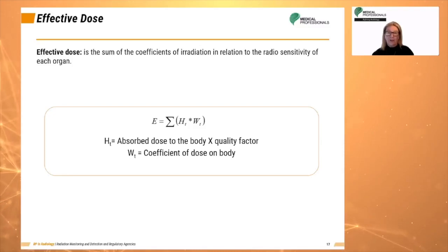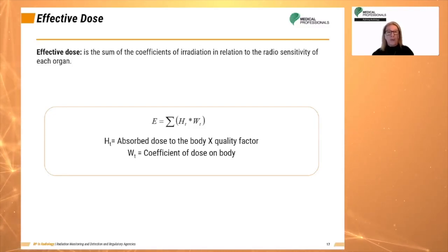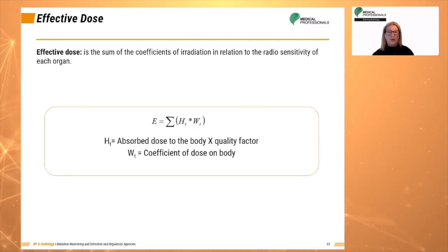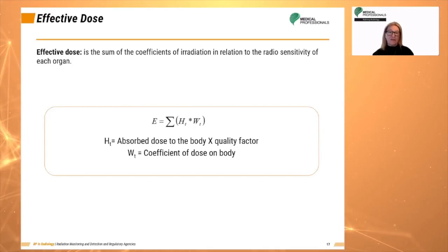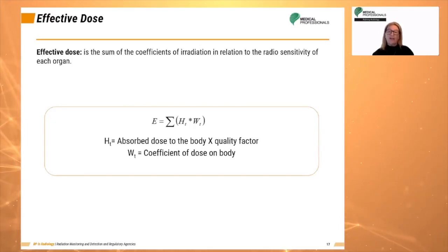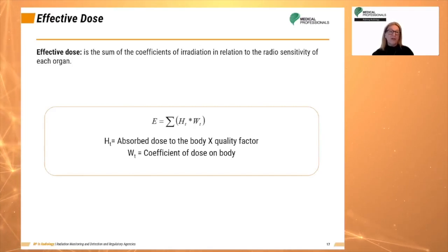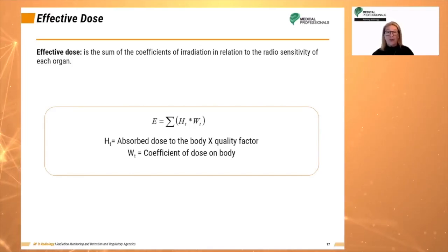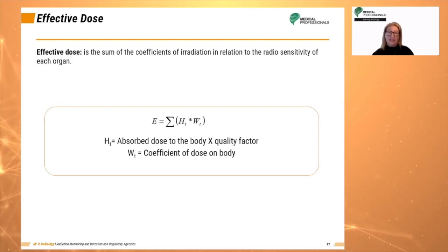It is often useful to express the rate at which the dose is delivered, known as the dose rate, such as microsieverts per hour or millisieverts per year. Different body parts have different sensitivities to radiation — for example, the head is less sensitive than the chest. Effective dose relates to the overall long-term risk to a person from a procedure and is useful in comparing risks from different procedures.